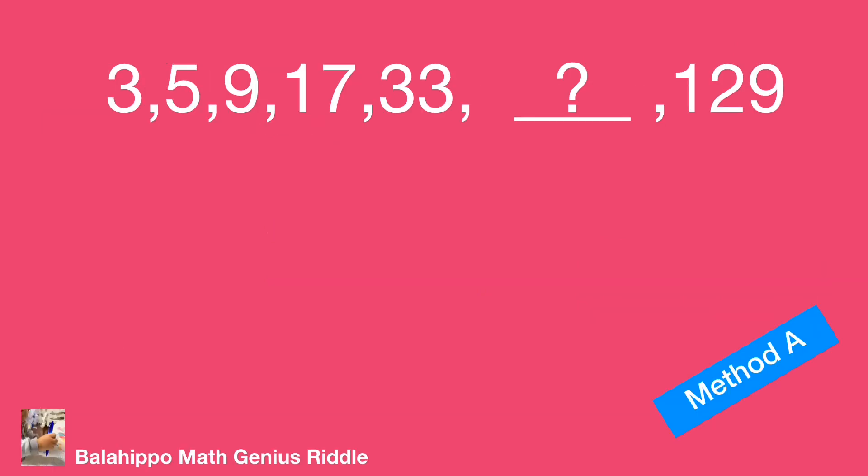I introduce two methods. Method one, we find the second number equals the first number times 2 minus 1. Like 5 equals 3 times 2 minus 1. 9 equals 5 times 2 minus 1.